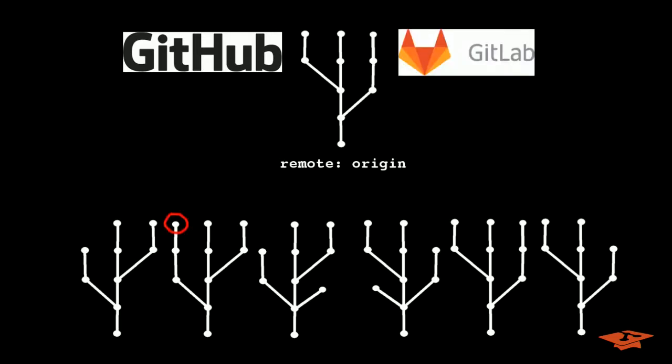In Git, making a commit is a local action. Commits are shared with a remote through Git push and from a remote through Git fetch.